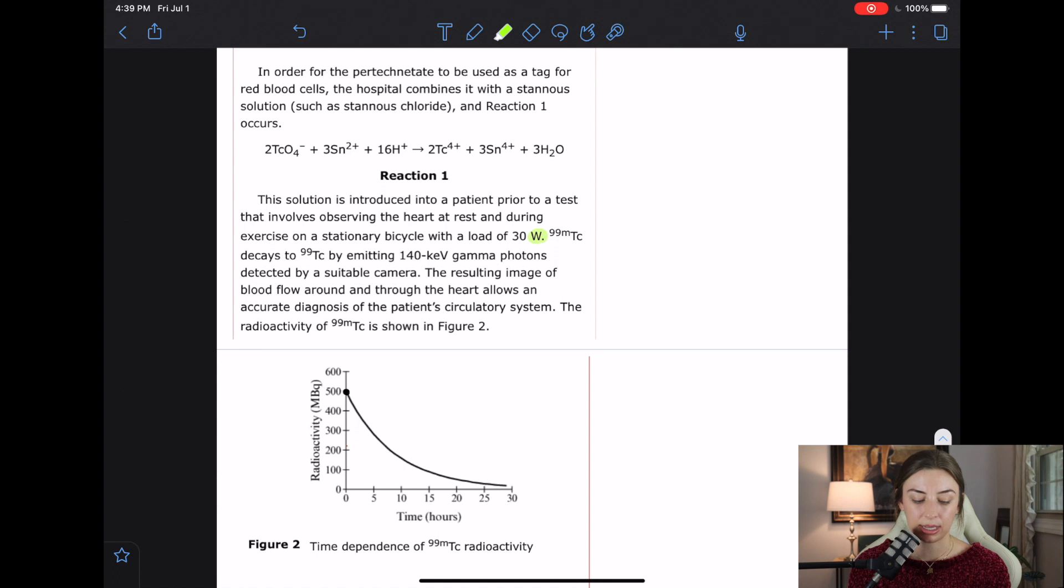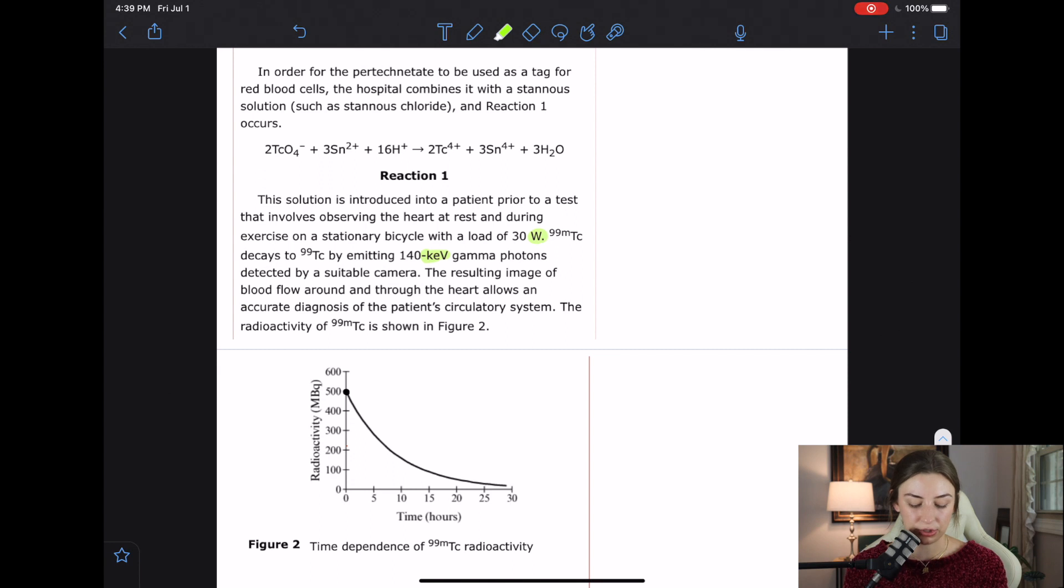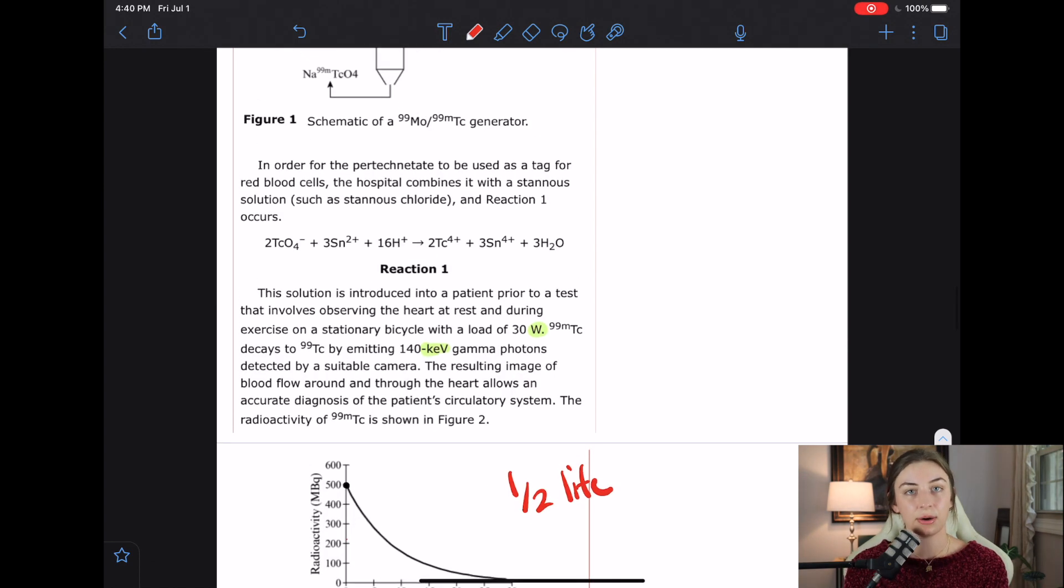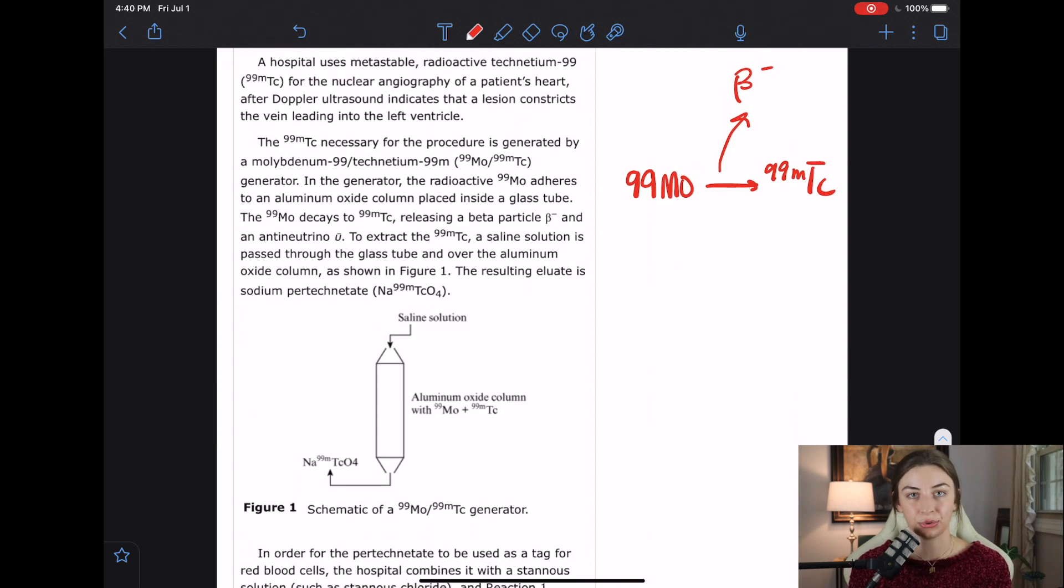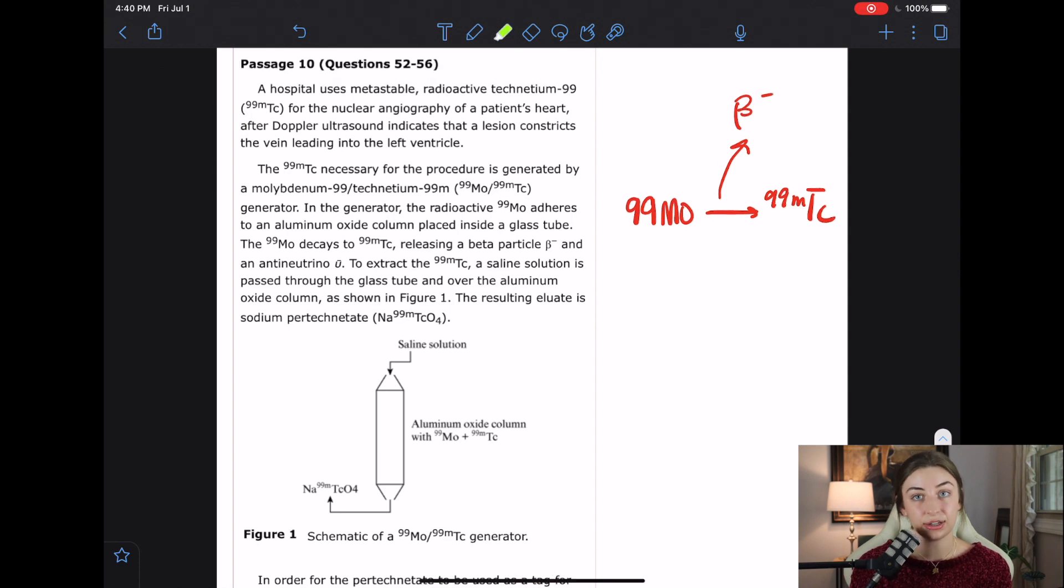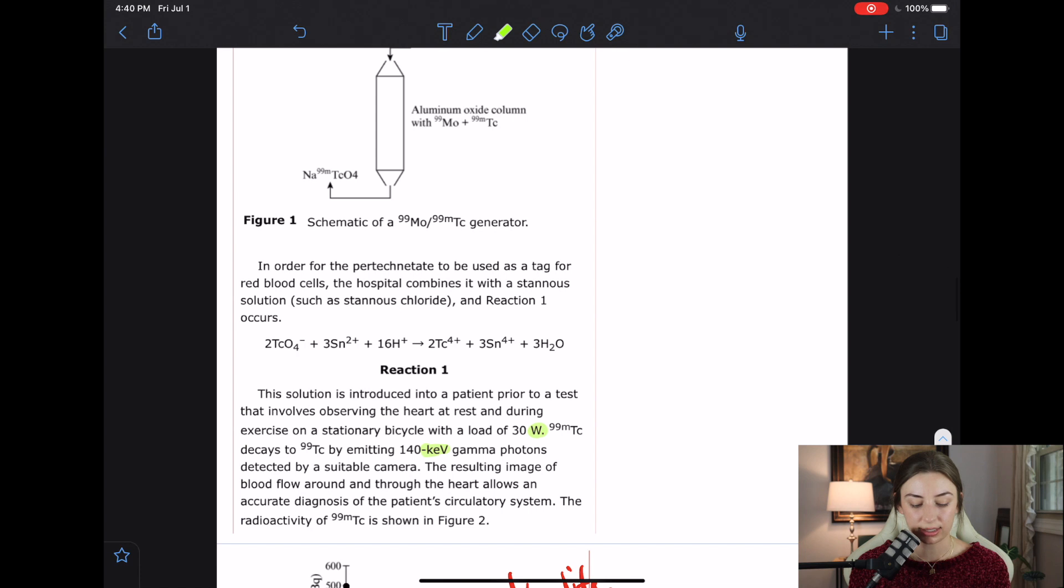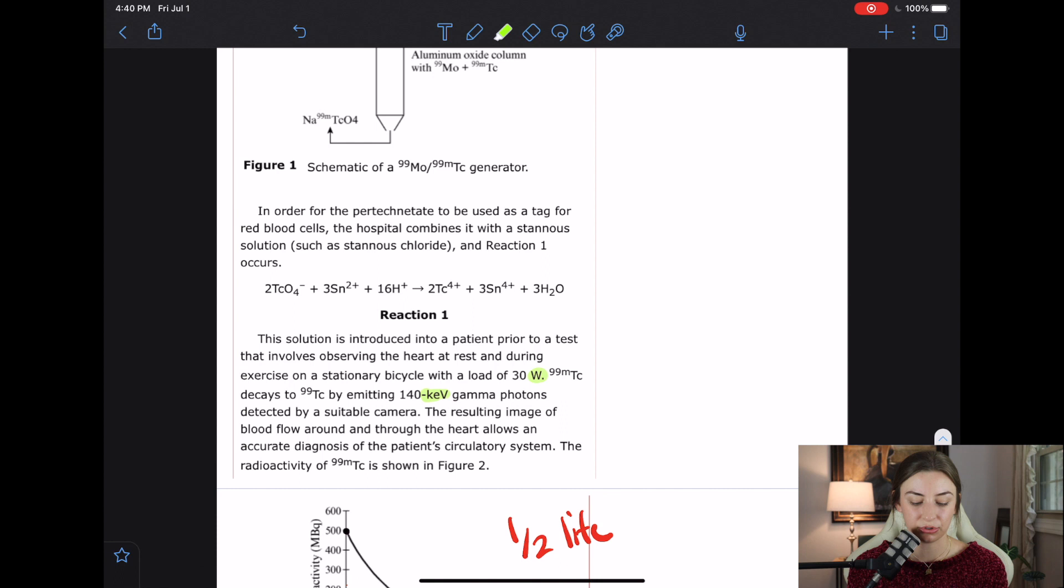99 MTC decays to 99 TC by emitting 140 kilo electronvolt gamma photons detected by a suitable camera. The resulting image of blood flow around and through the heart allows an accurate diagnosis of the patient's circulatory system. The radioactivity of 99 MTC is shown in Figure 2. Immediately when I look at radioactivity and time, I'm thinking half-life, so I'm just gonna make a note of that. My question is, how are they going to relate this back to basic sciences? Because they cannot expect us to know anything about angiography or the veins leading to the left ventricle or heart damage or anything about the medical part of this. And so we've got to get some basic sciences out of here. Radioactivity could be one that they bring up. Obviously they could use these watts somehow. They could probably ask us something about this reaction. I see that there's different charges. Maybe there's some redox going on. I don't know, but don't get too caught up in the passage. Stay grounded in your basic sciences. They can't ask you anything too crazy.